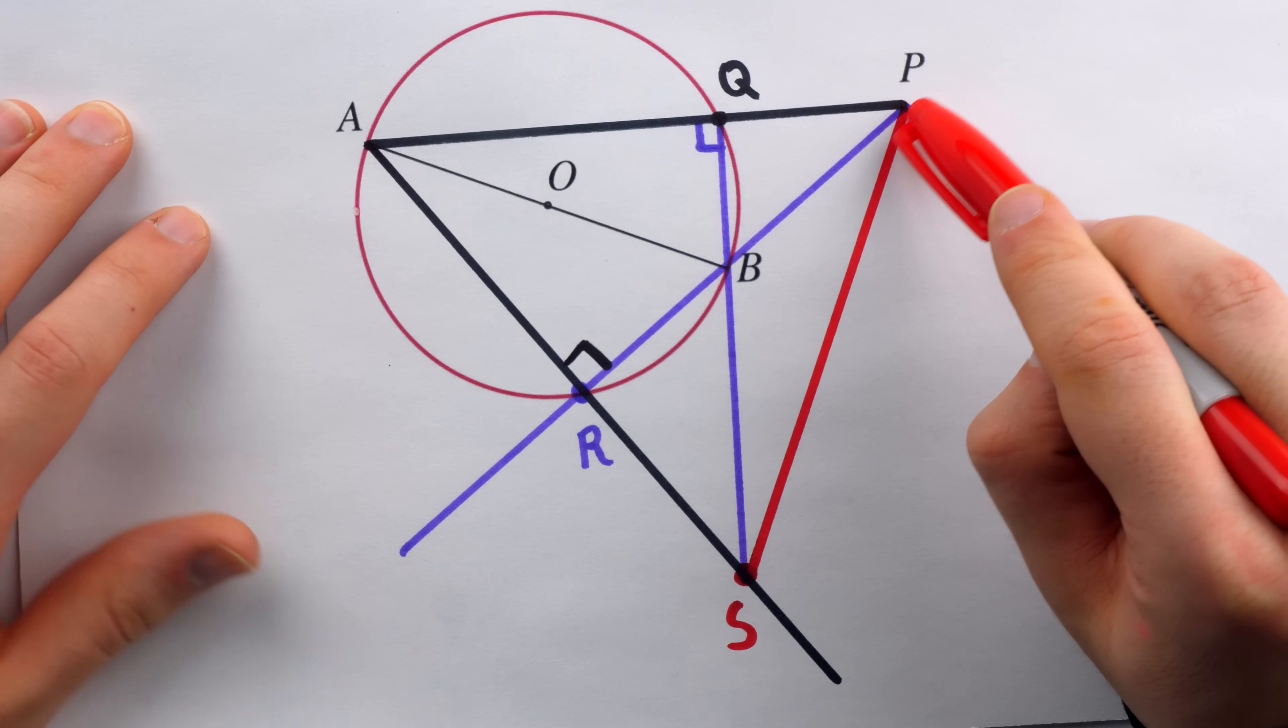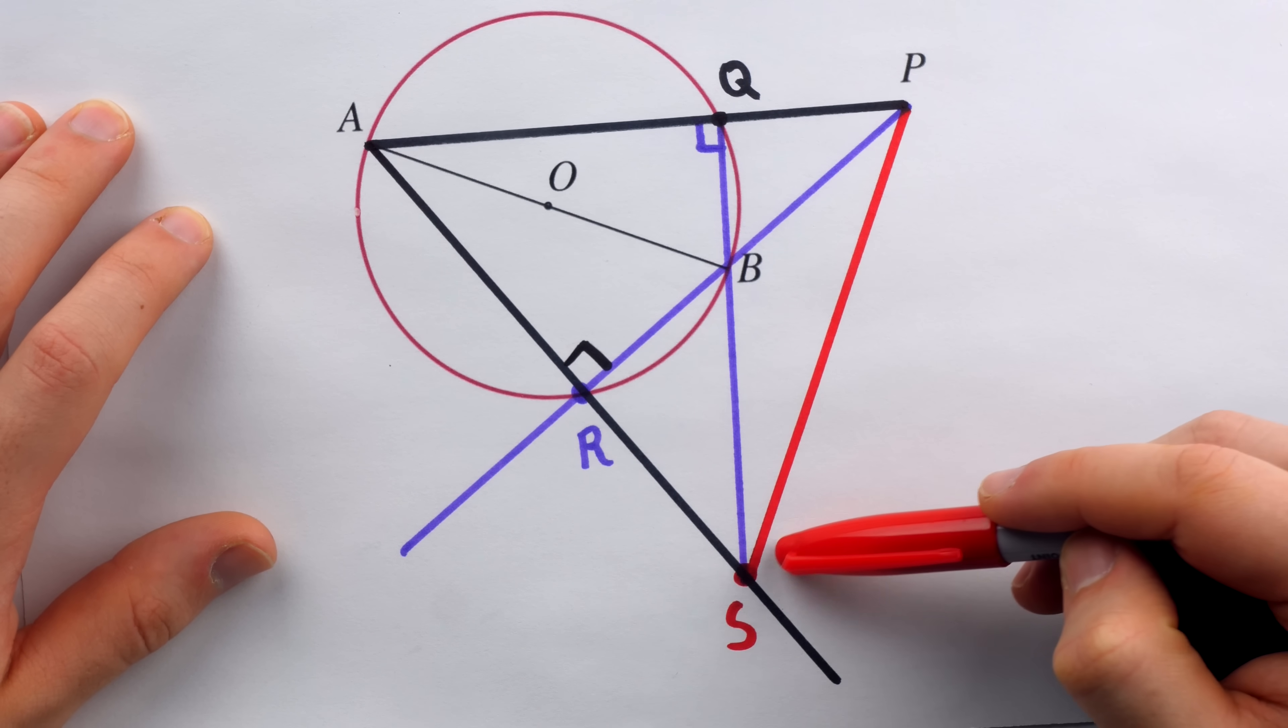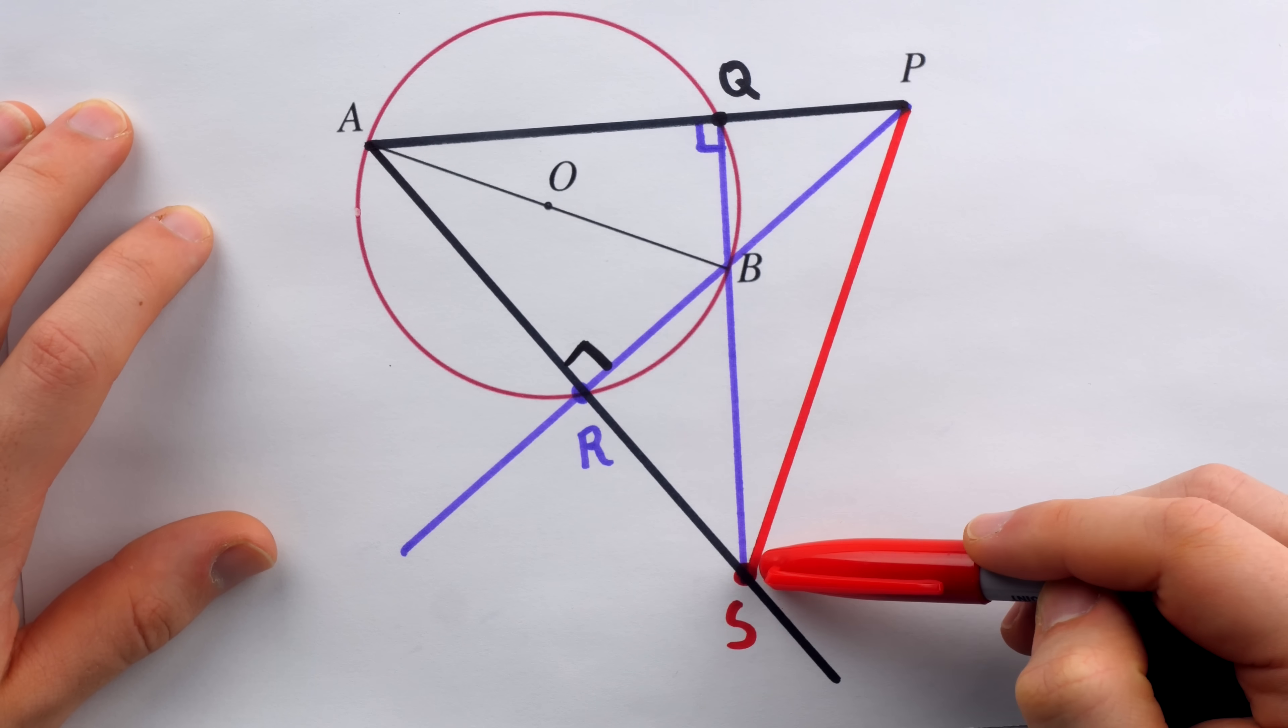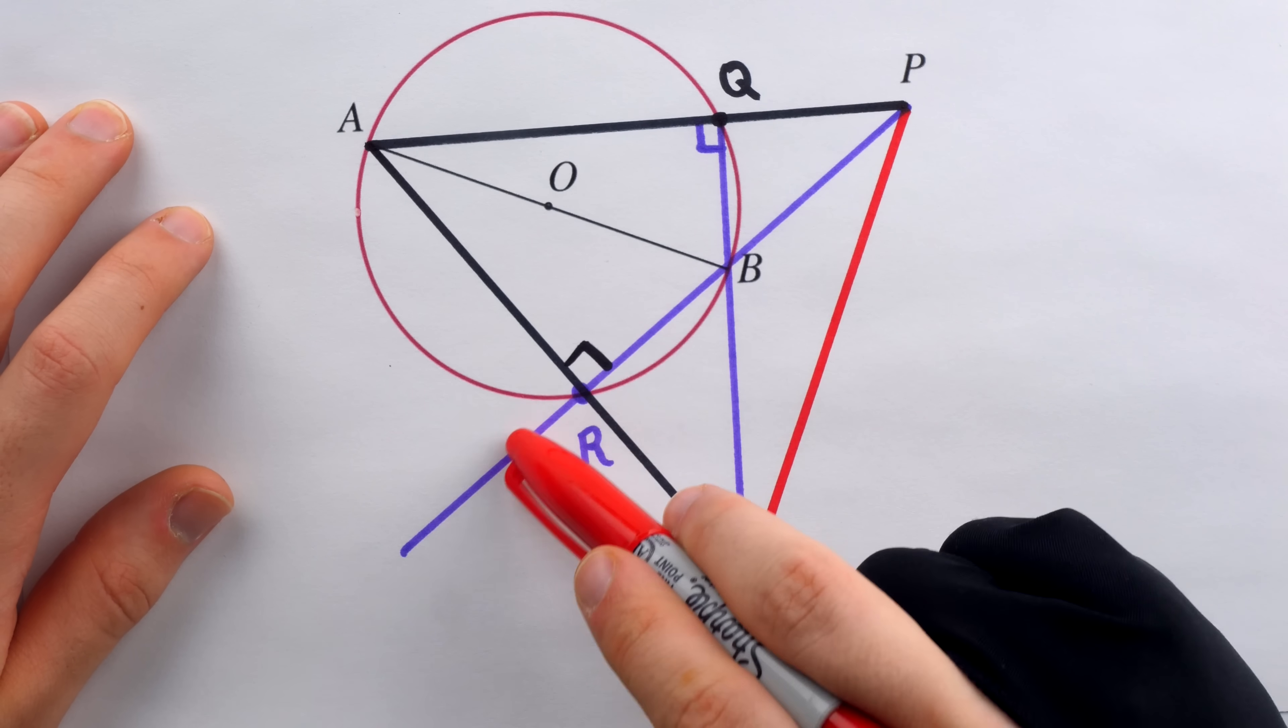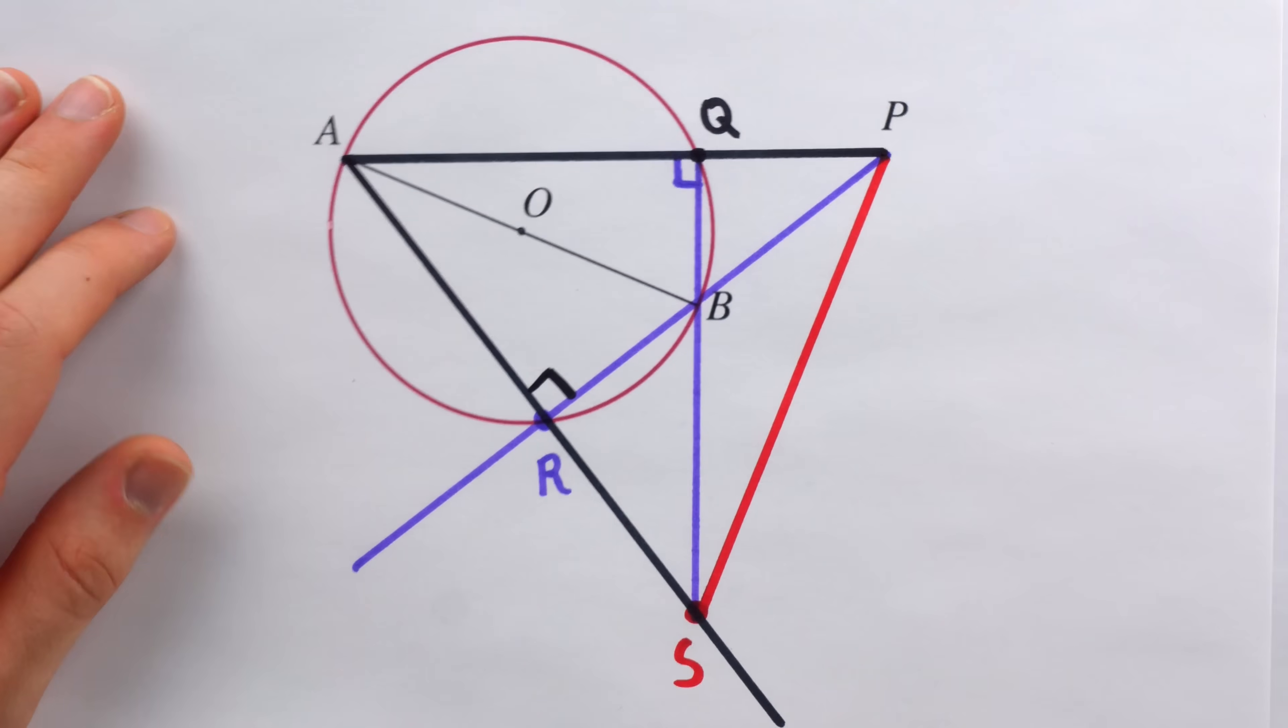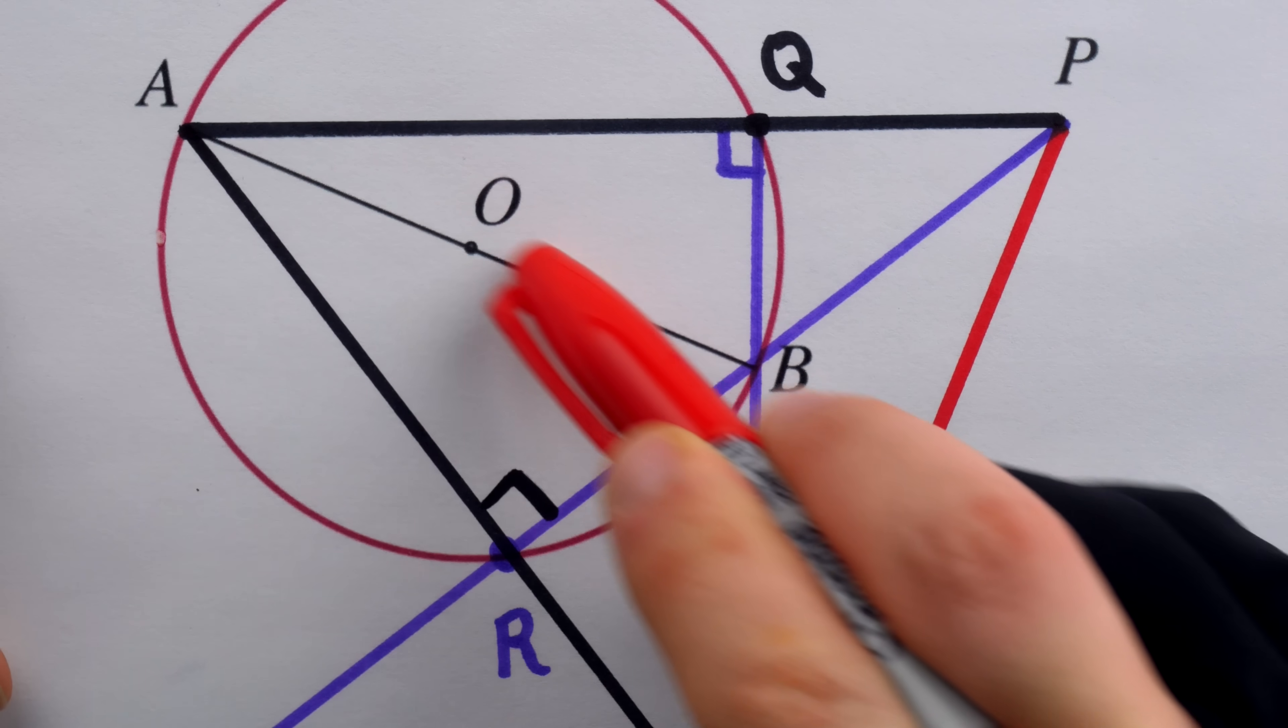There is this altitude from P to the opposite side AS. There is this altitude from S to the opposite side AP. And remember, those two altitudes were constructed to intersect at that point on the circle, B, at the end of this diameter.